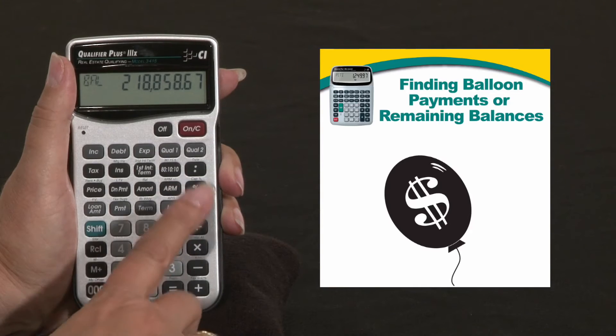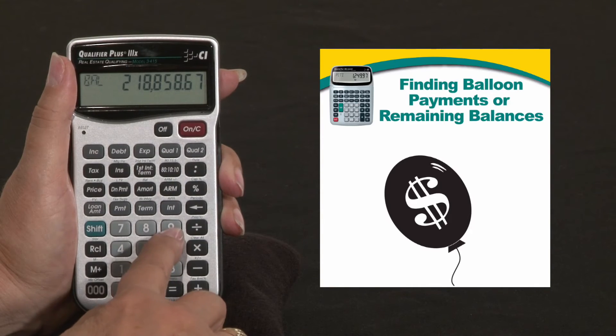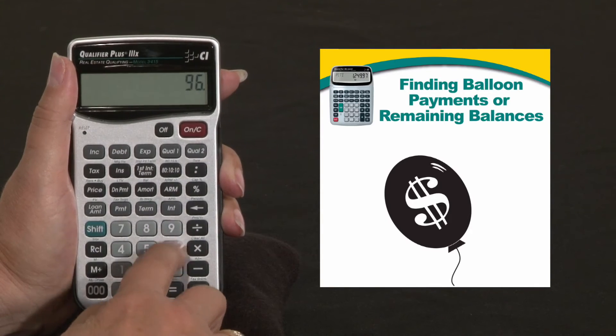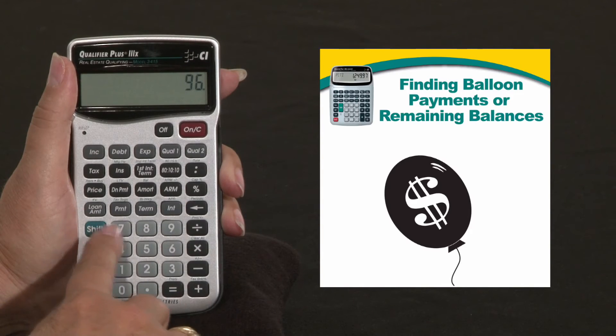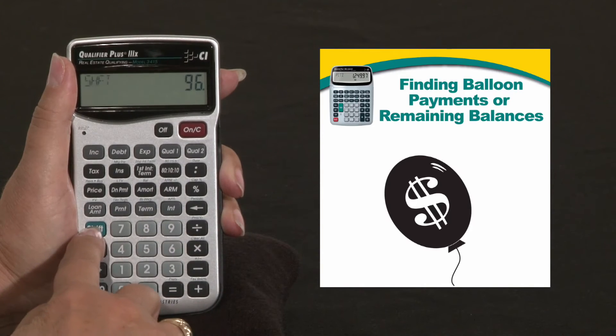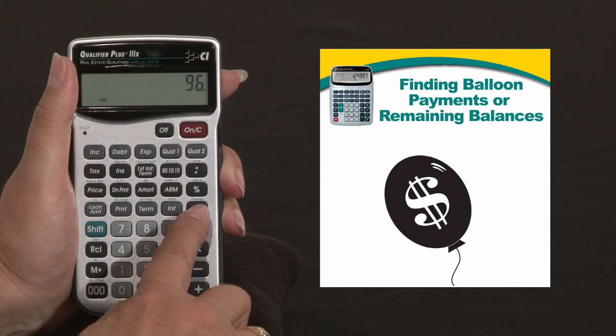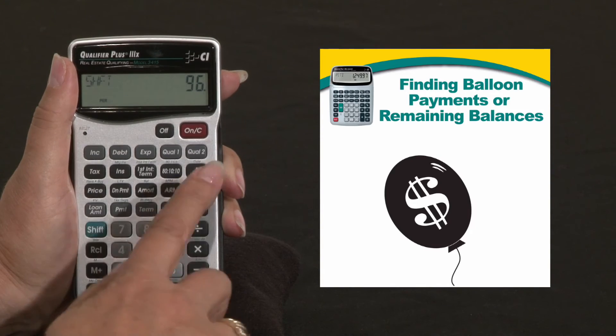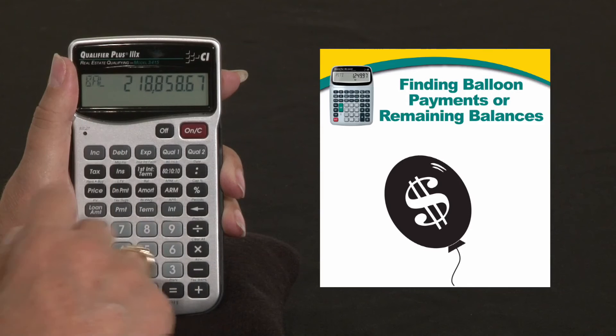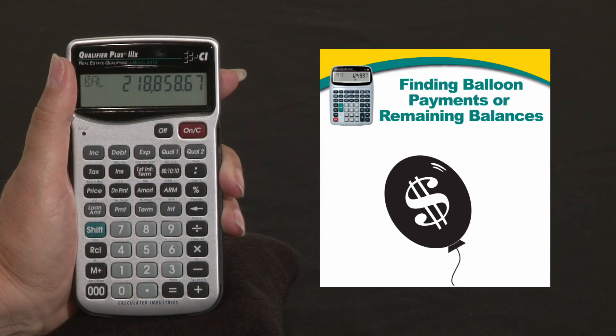Now I can also do monthly. So maybe I have 96 payment I want to know the balance of. So I entered 96. I'm going to do shift, back arrow because I want that to be a 96 payment. And then I'm going to press shift, amort. And there's our balance after the end of the 96 payment.